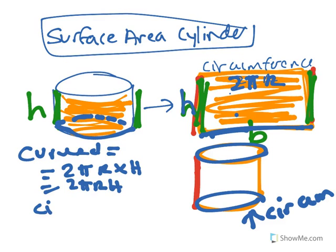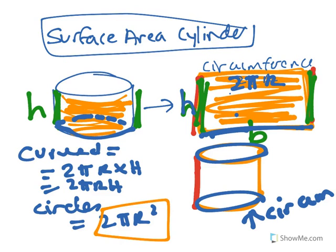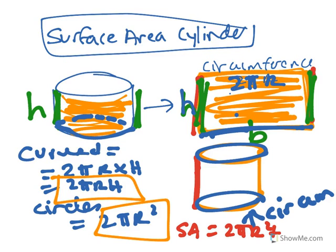And the two circles at the end, there's two of them, is 2 lots of pi r squared because pi r squared is the surface area of a cylinder. So that means that all together, if you get the whole surface area, it's 2 pi r squared plus 2 pi r h.